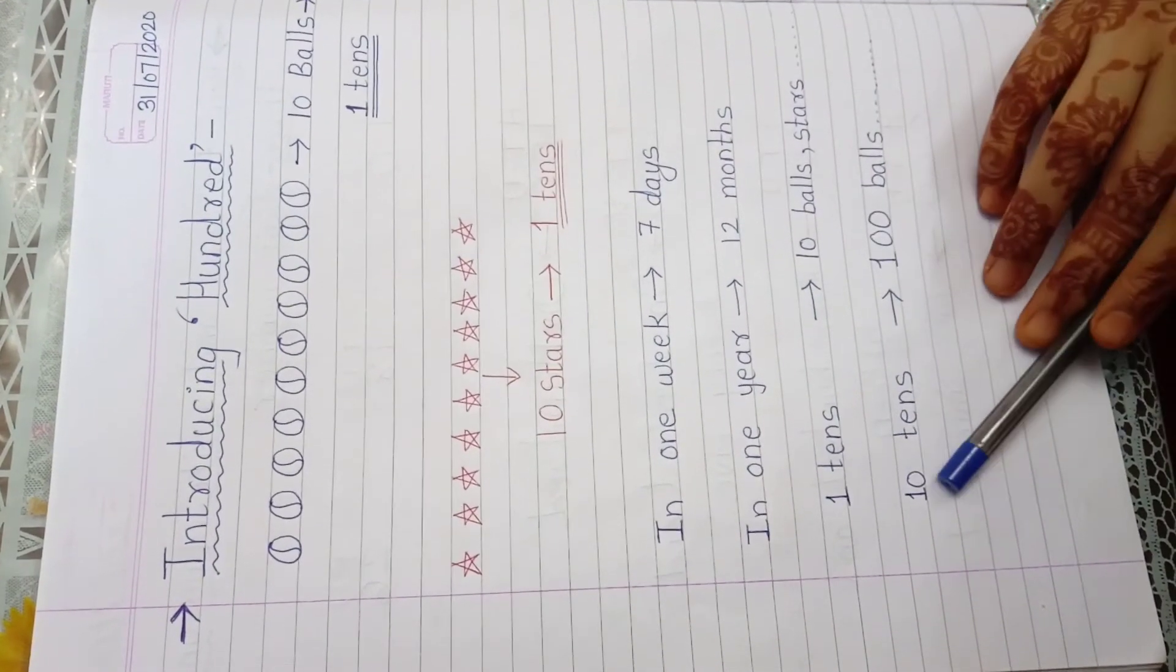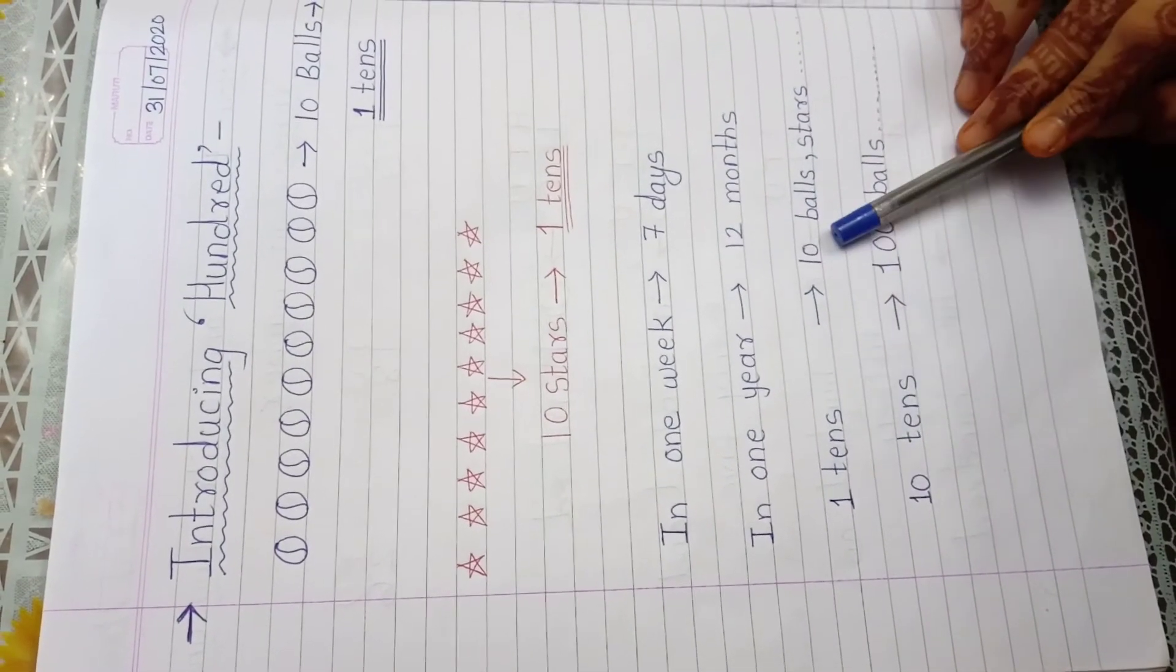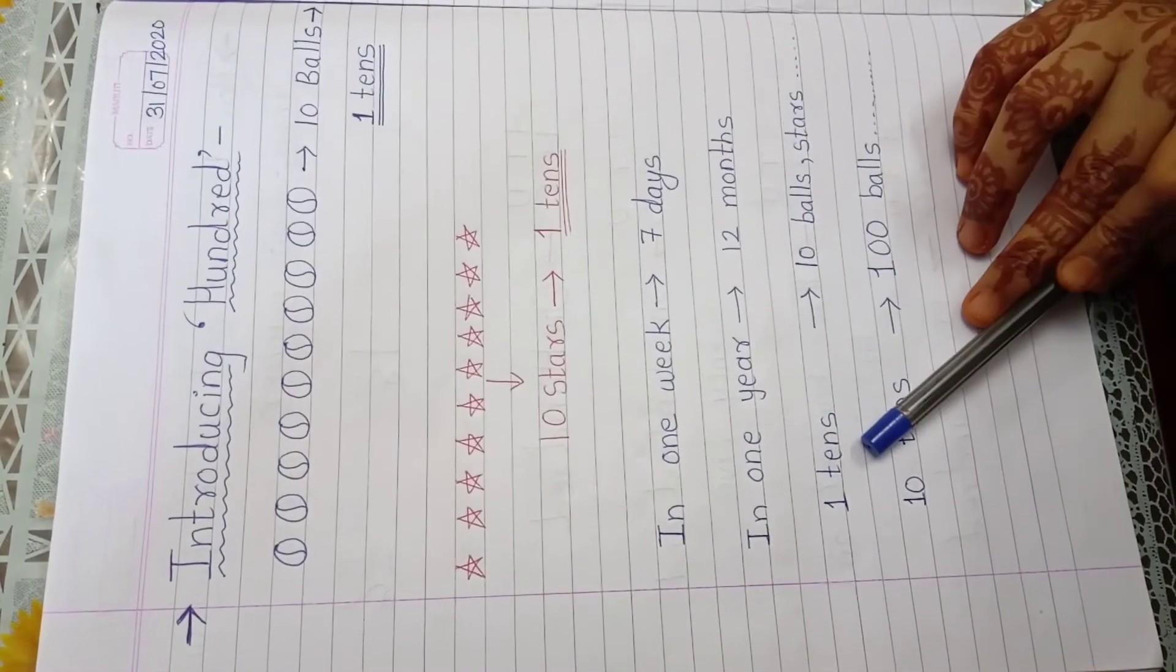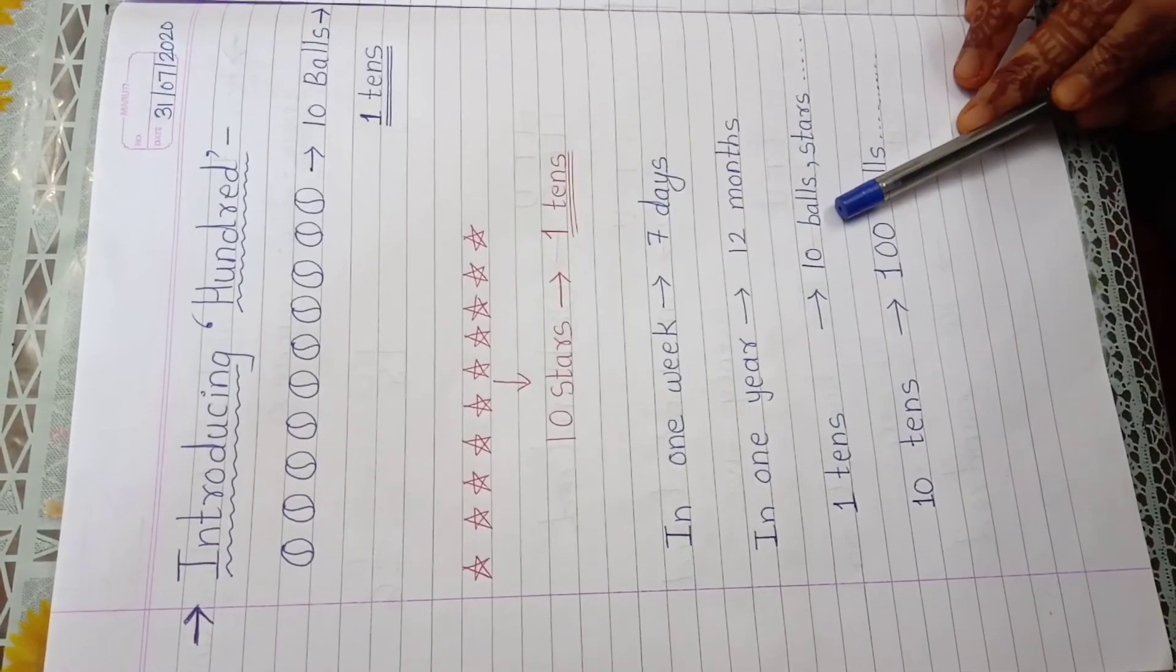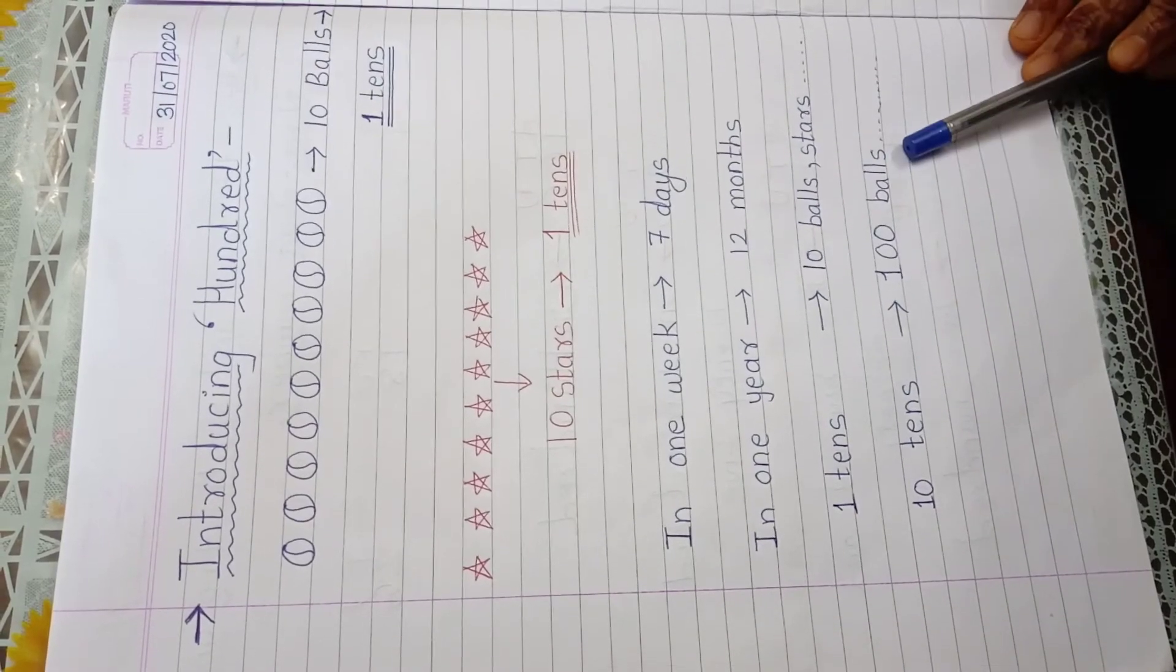For example, see here, if 1 tens is equal to 10 balls, then 2 tens will be 20 balls. 3 tens will be 30 balls. 4 tens will be 40 balls. 5 tens will be 50 balls. Understand? So like that, 10 tens is equal to 100 balls.